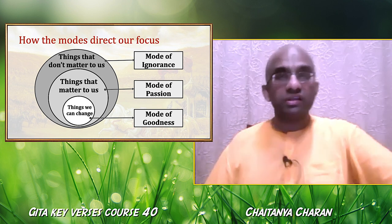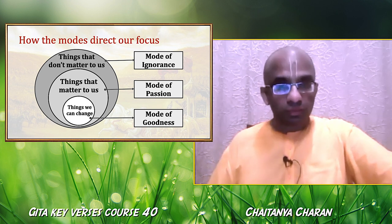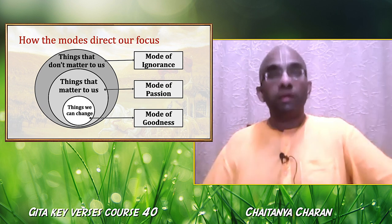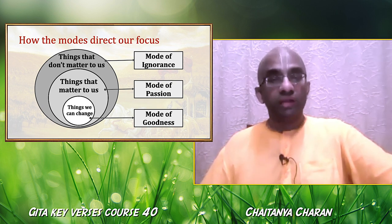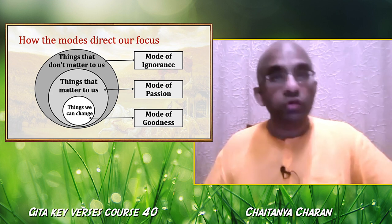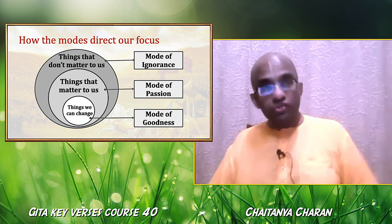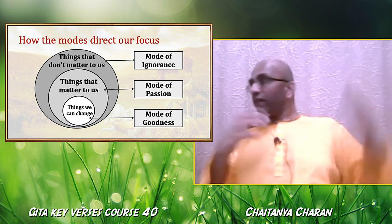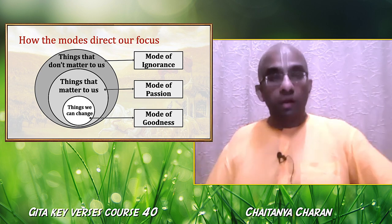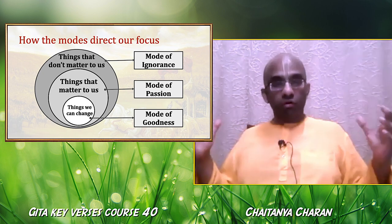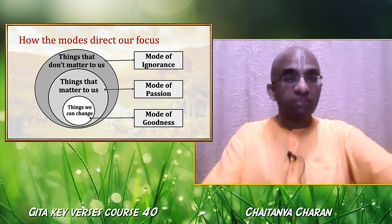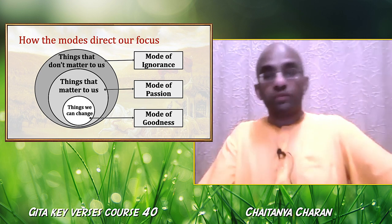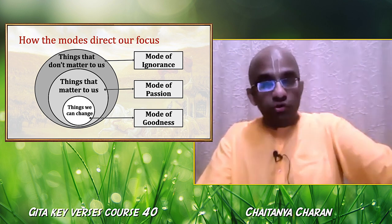Functioning in the mode of goodness is the most productive. The world largely functions in the modes of passion and ignorance. The mode of passion involves activity, but what activity to do must be decided thoughtfully — and that thoughtfulness is usually in the mode of goodness. If we start the day by prioritizing from twenty things down to five that must be done, that prioritization is in the mode of goodness. At least some time for self-reflection, journaling, introspection, or meditation — that is the mode of goodness.